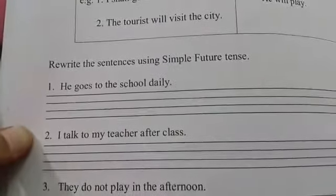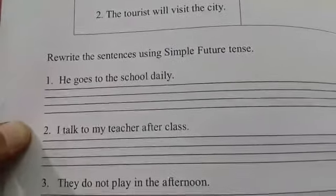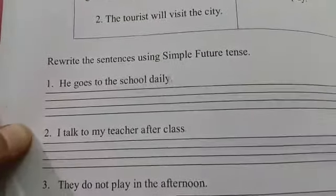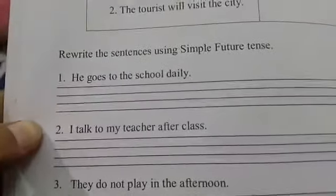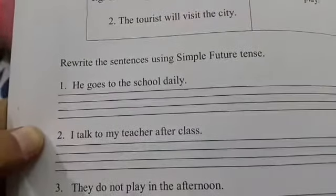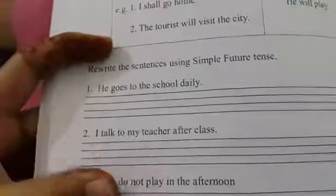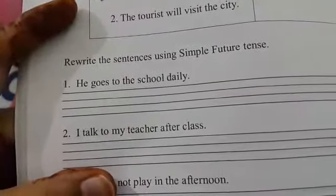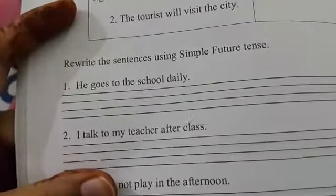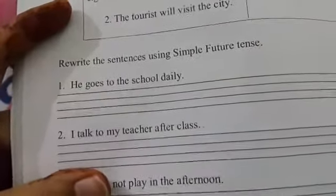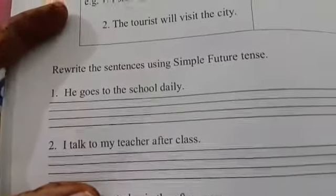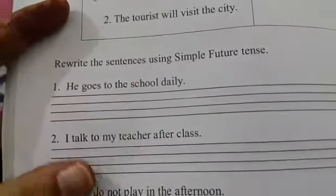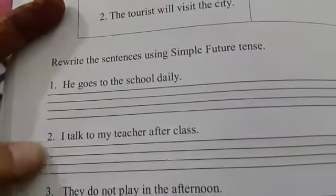Number one: 'He goes to the school daily.' You have to change it to simple future tense. You will add will and use the first form of the verb — remove the 'es.' Answer: 'He will go to school daily.' Number two: 'I talk to my teacher after class.' Answer: 'I will' or 'I shall talk to my teacher after class.'